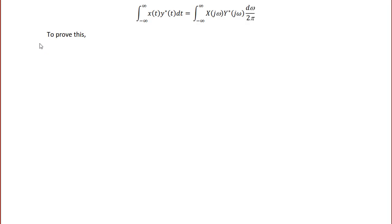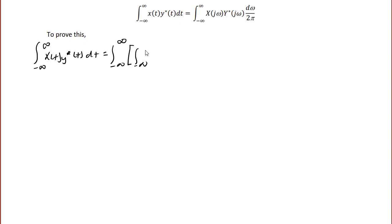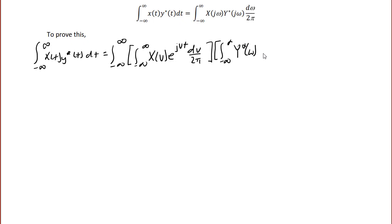To prove this, we're first going to write the integral from negative infinity to infinity of x(t) y-conjugate(t) dt. Then we're going to rewrite x(t) as its inverse Fourier transform. So this is the integral from minus infinity to infinity of X(v) e^(jvt) dv over 2π, times the integral from negative infinity to infinity of Y-conjugate(ω) e^(-jωt) dω over 2π.